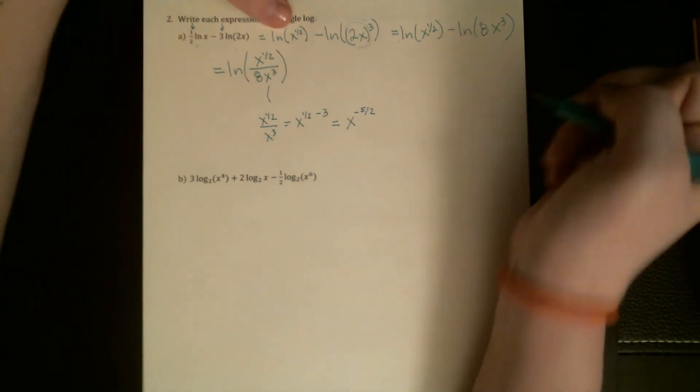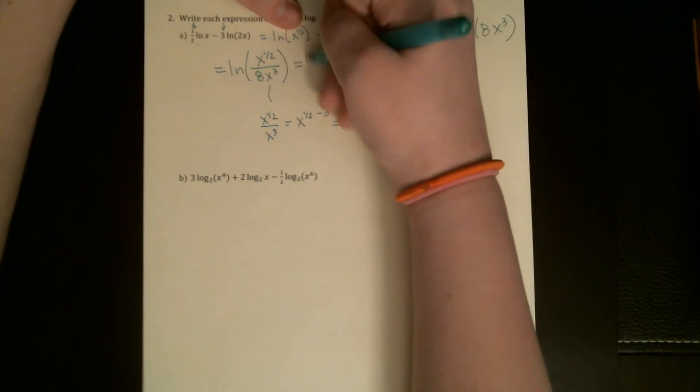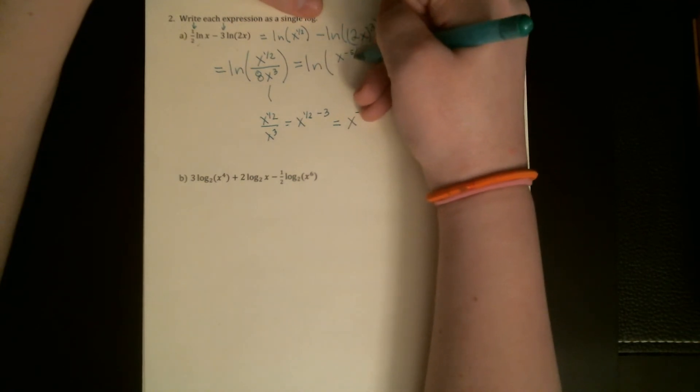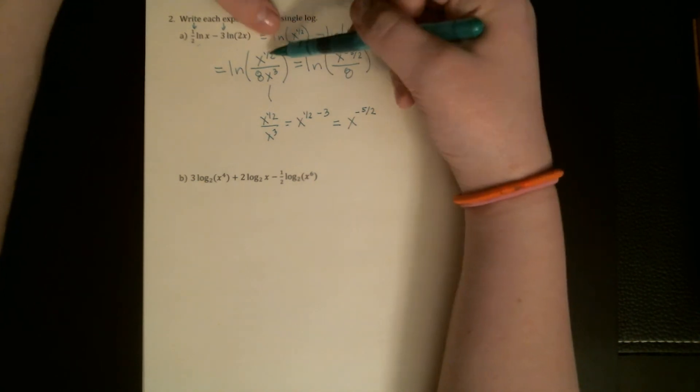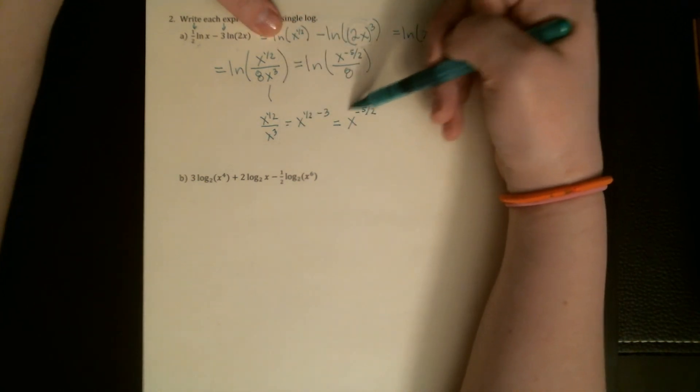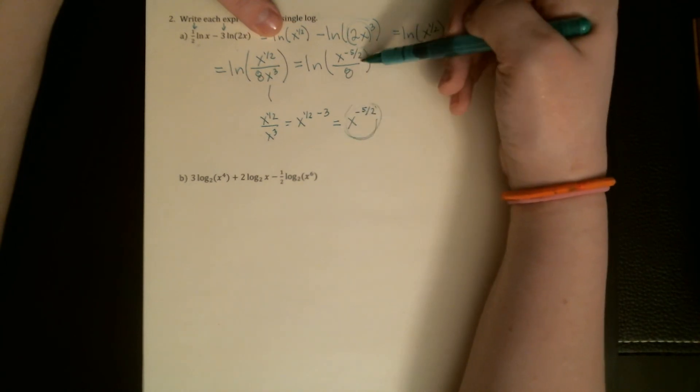When I'm thinking about what that means here, it means that I get an x to the negative five-halves in the top of the fraction. So this is saying x to the one-half over x cubed equals x to the negative five-halves. That negative five-halves always would go in the top.